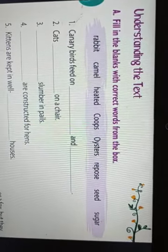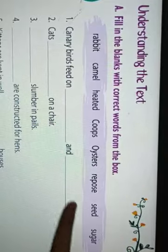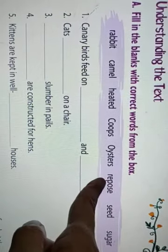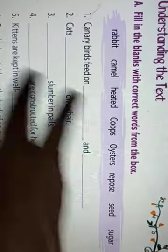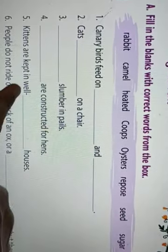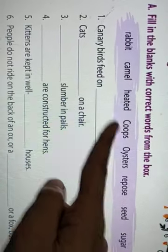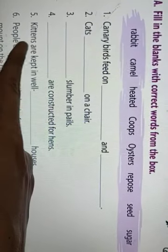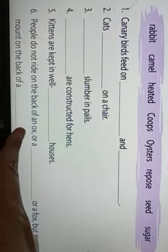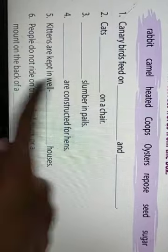Fill in the blanks with correct words from the boxes. Canary birds feed on seed and sugar. Cats repose on a chair. Oysters slumber in pails. Coops are constructed for hens. Kittens are kept in well-heated houses. People do not ride on the back of an ox, a rabbit, or a fox, but they mount on the back of a camel.